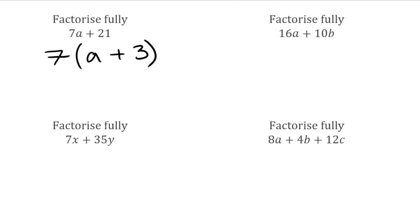For the next one, the highest common factor of 16 and 10 is 2. I don't have any common letter terms — I've got an a on the left-hand side and a b on the right. Opening the bracket: we need 16a, which is the same as 2 multiplied by 8a, then plus, and for 10b, that would be 2 multiplied by 5b.